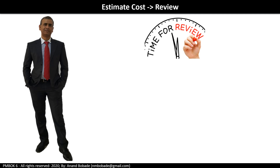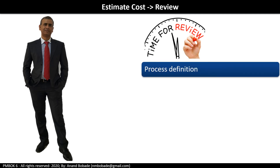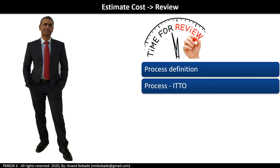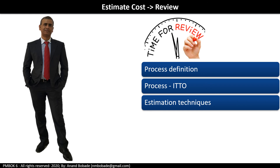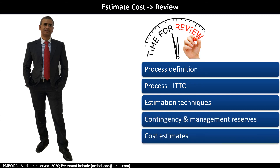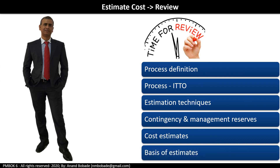Quick recap: this session was all about estimating cost. We started with the process overview and definition, discussed inputs, tools and techniques, and outputs. We covered estimation techniques — analogous, parametric, three-point, and bottom-up estimation — along with contingency and management reserves, and key outputs: cost estimates and basis of estimation. See you in the next session on Determine Budget.